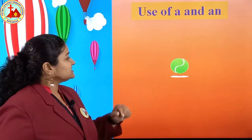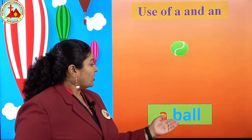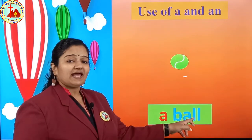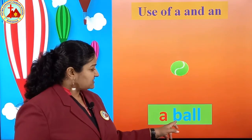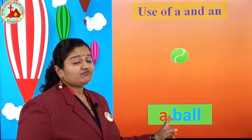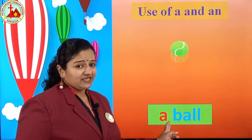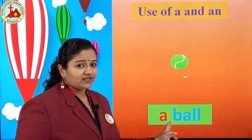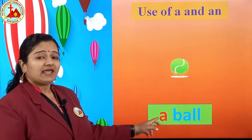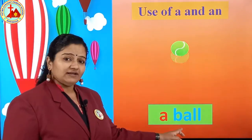This is the picture of a ball. Ball spelling starts with B-A-double L, ball. So B is the first letter. Before B, what do we have to put — A or AN? B is not a vowel, so we put A. Say: a ball.